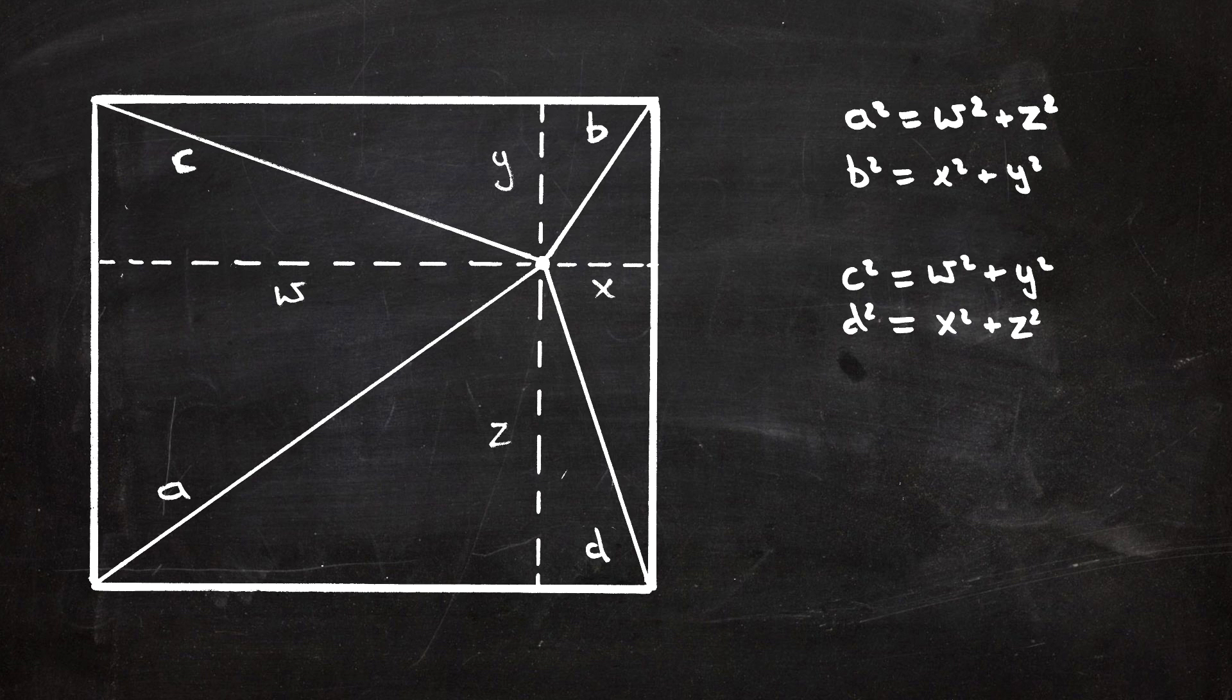And from there, you can see that A squared plus B squared is equal to C squared plus D squared.